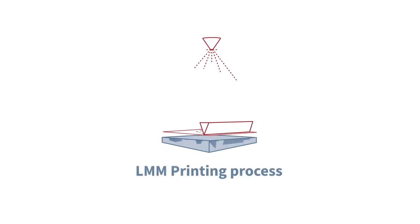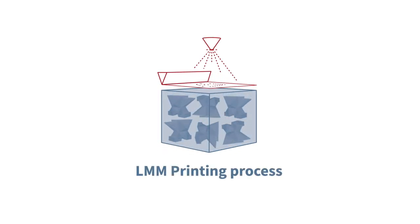The Incus LMM process uses the principle of photopolymerization, where metal powder is dispersed in a light-sensitive resin and selectively polymerized by blue light exposure.